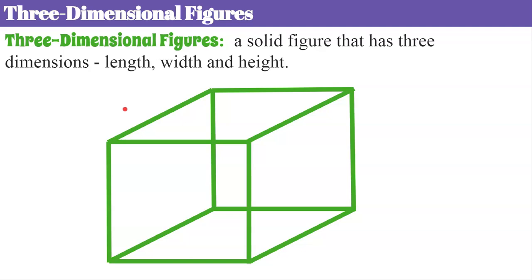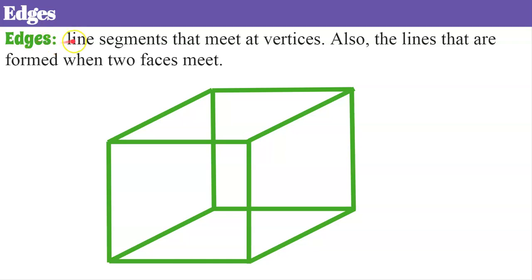And this is what I'm going to use today to explain vertices, edges, and faces. So edges by definition are line segments that meet at vertices and they're also the lines that are formed when two faces meet. So you can see that understanding edges means you also have to understand vertices and faces. So let's put this all together today.